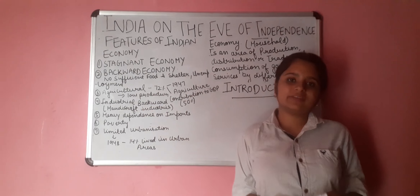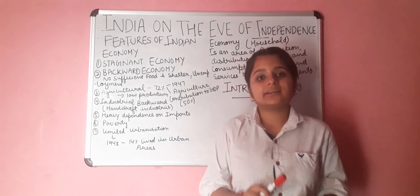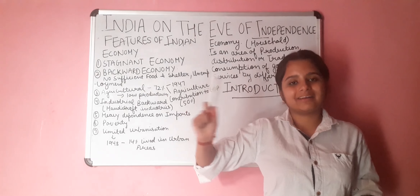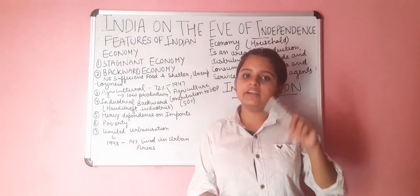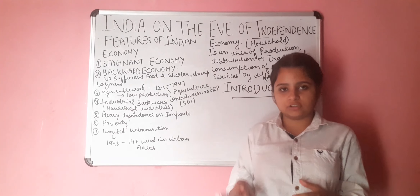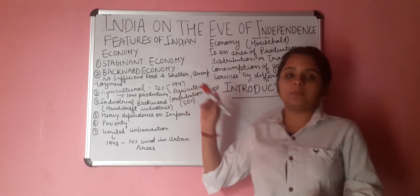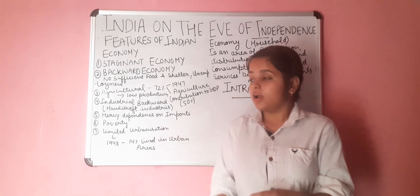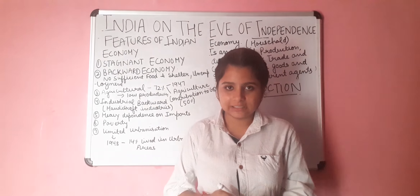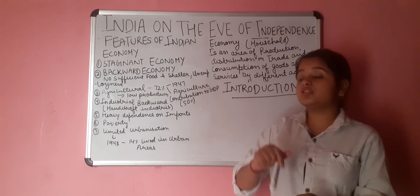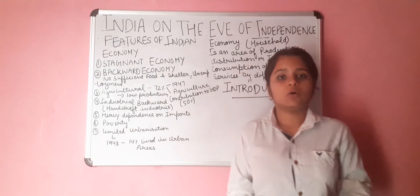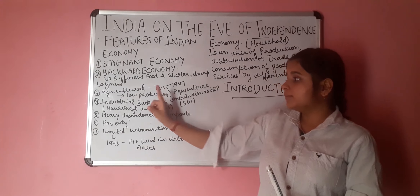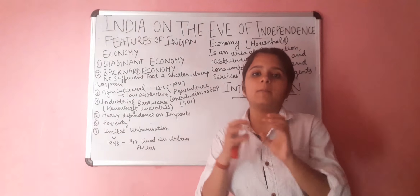Next, feature 3 is the agriculture sector. As we are all aware, India's economy was mainly based on the agriculture sector. After independence, 72% of the population was dependent on agriculture. Their entire economy was agriculture-dependent. There was also low productivity in agriculture, and agriculture's contribution to GDP was only about 50%. That is why it is characterized as underdeveloped agriculture.